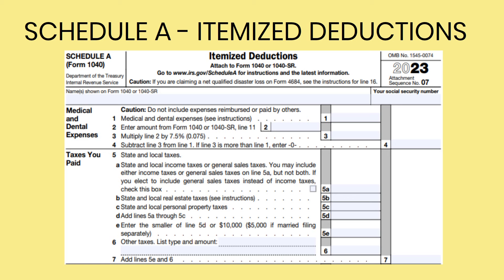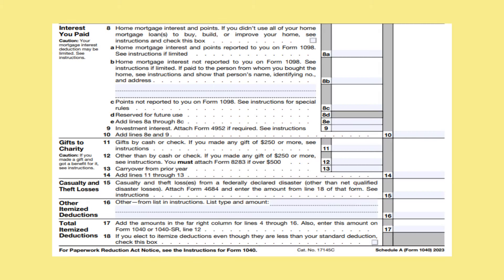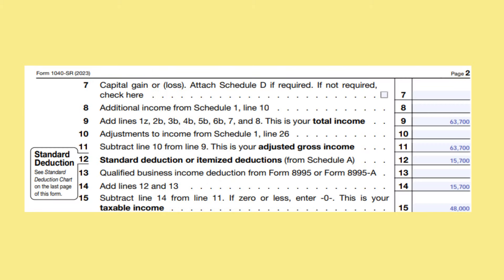In short, if you have medical and dental expenses that exceed 7.5% of your adjusted gross income, taxes that you paid, mortgage interest that you paid, and charitable contributions that exceed $15,700, you should fill out Schedule A and take the itemized deductions. Since in this example you are not an independent contractor or you do not have your own business, line 13 will be blank and you will add lines 12 and 13 together on line 14 to arrive at $15,700. On line 15, you will subtract line 14 from line 11 to arrive at $48,000 for your taxable income.